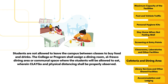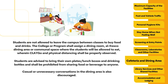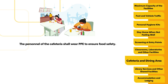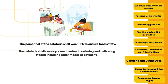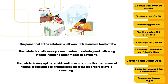Students are not allowed to leave the campus between classes to buy food and drinks. The college or program shall assign a dining room, alfresco dining area, or communal space where students will be allowed to eat, where clean-as-you-go and physical distancing shall be properly observed. Students are advised to bring their own plates or lunch boxes and drinking bottles, and shall be prohibited from sharing food or beverages. Casual or unnecessary conversations in the dining area are also discouraged. The cafeteria personnel shall wear PPE to ensure food safety, and shall develop a mechanism for ordering and delivering food, including other modes of payment, such as online ordering with designated pickup areas to avoid crowding.